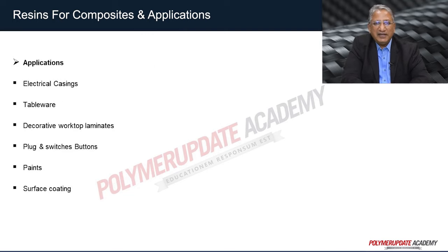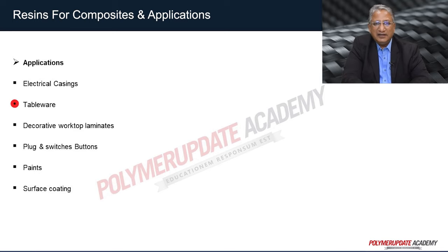Urea formaldehyde resin finds a variety of applications in manufacturing electrical casings, tablewares, decorative worktop laminates, plugs and switches, buttons, paints, and surface coatings. In the next part, we will study melamine formaldehyde resin, its manufacturing, properties, and uses, as well as polyurethane resins.